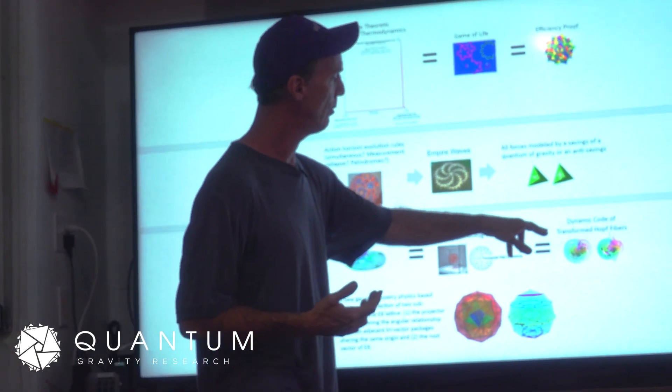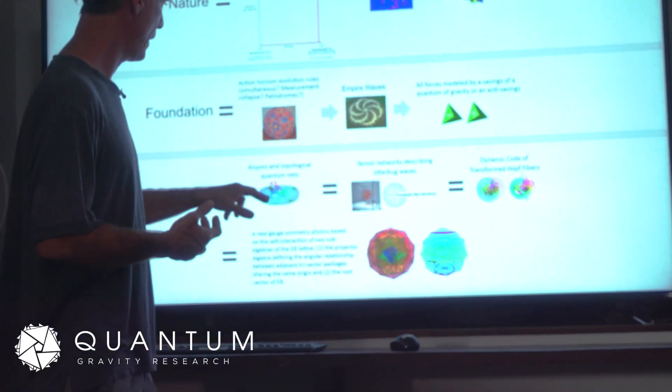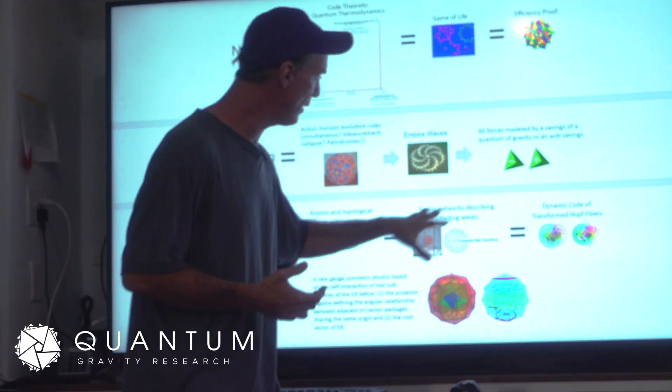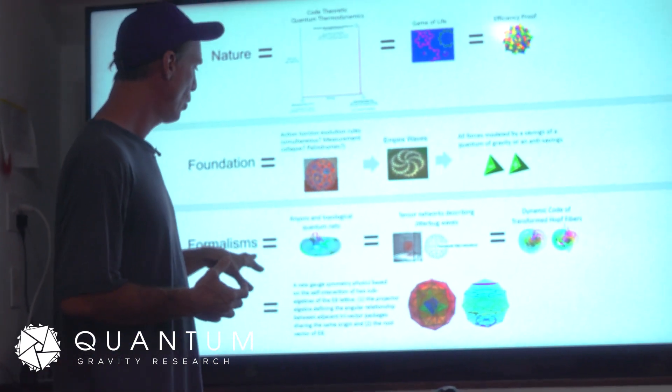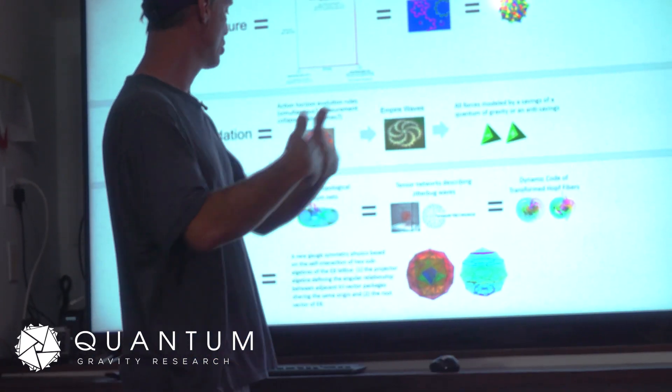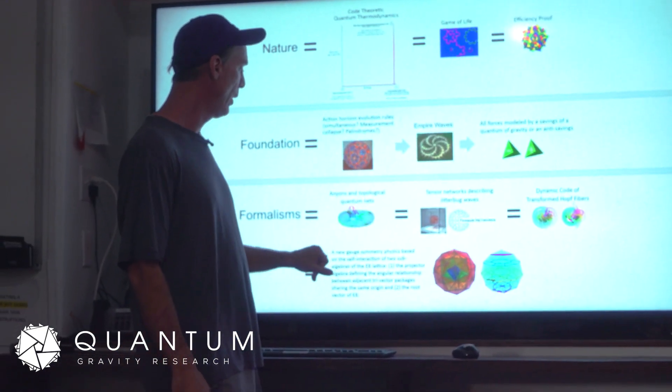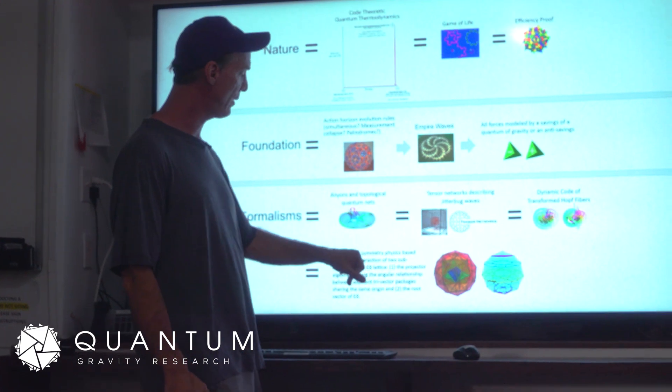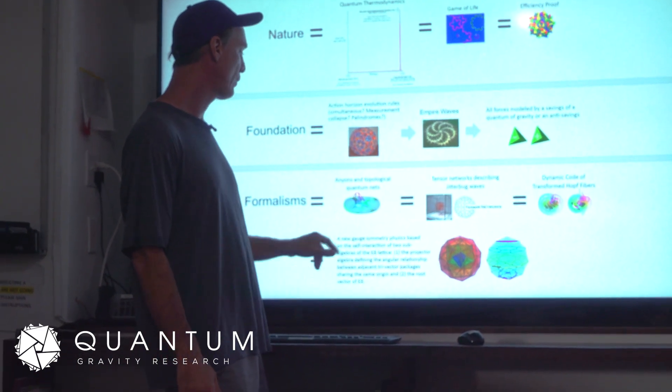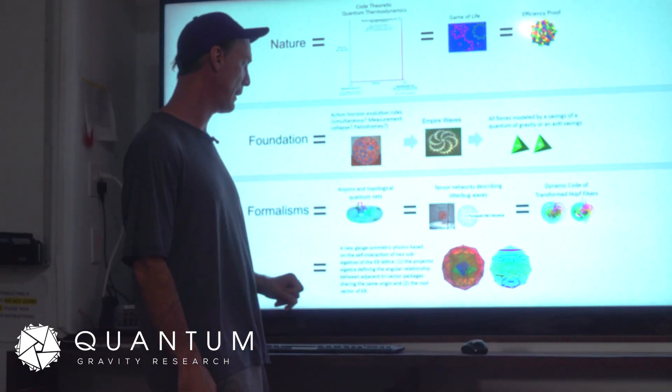All these three formalisms will spit out or generate a new gauge symmetry physics that no one has ever done before, which is based, as I said, on the self-interaction of two sub-algebras of the E8 lattice.